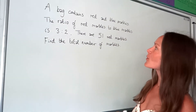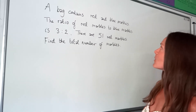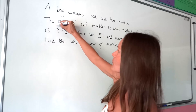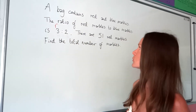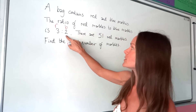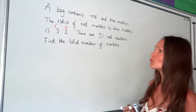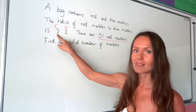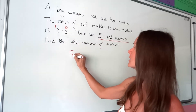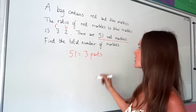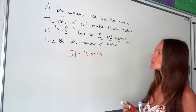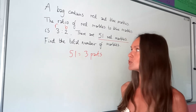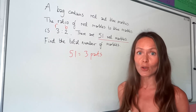In the final question, a bag contains red and blue marbles. The ratio of red to blue marbles is three to two. Red marbles come first so they take up three parts of the total; blue marbles are second so they take up two parts. There are 51 red marbles. Looking at the ratio, red marbles are three parts, so 51 equals three parts. We need to work out the total number of marbles - similar to the second example, we need the total number of parts first.